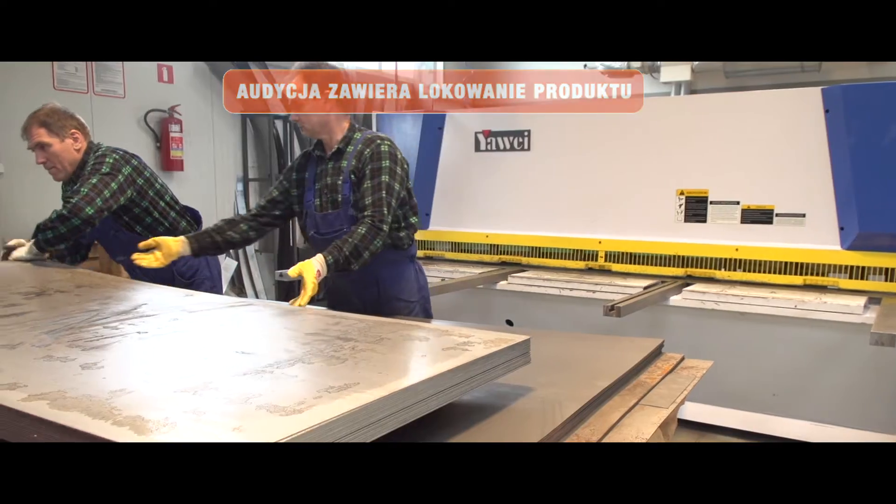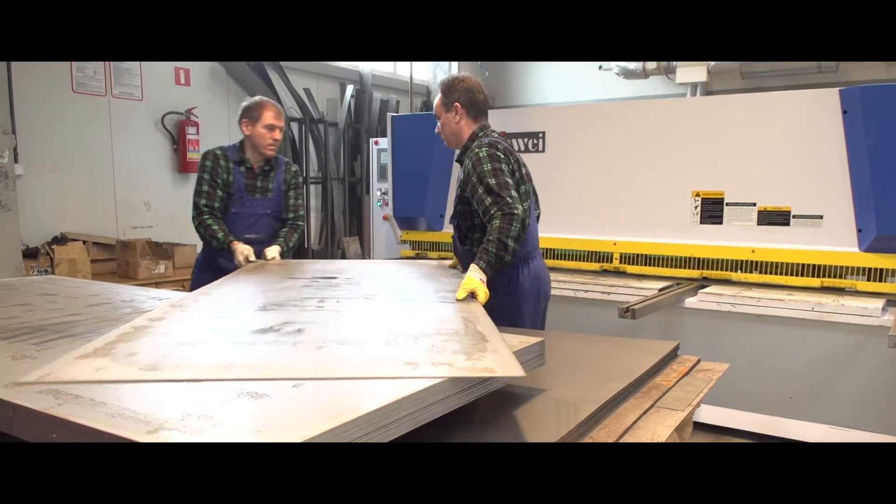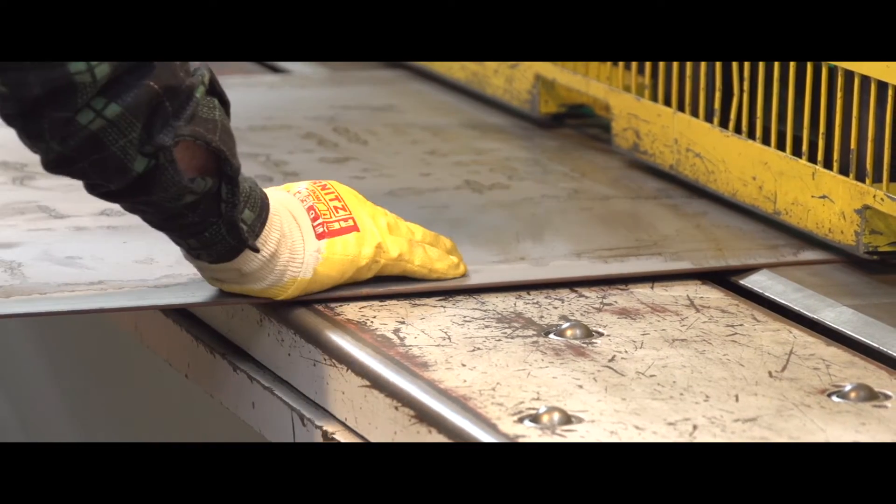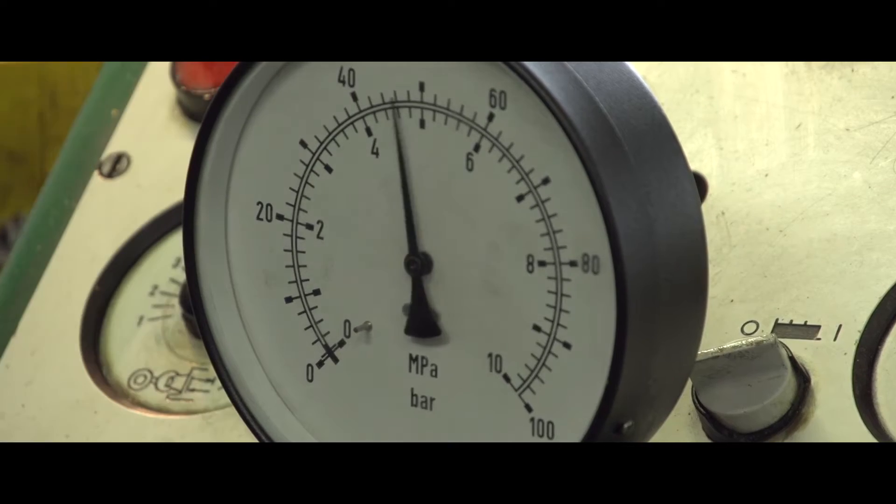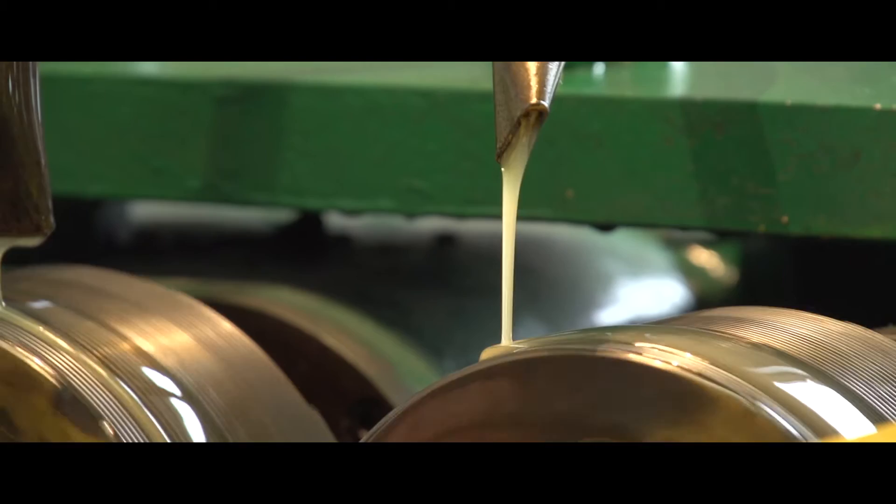Firma Oscoplast powstała w 1998 roku. W tym roku obchodzi swoje 18 urodziny. Jednak nie to było powodem wizyty telewizji w zakładzie produkcyjnym należącym do Zdzisława Kostyry i Mirosława Ostrzyżka.